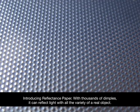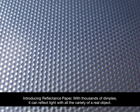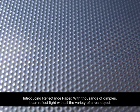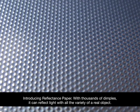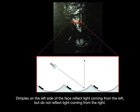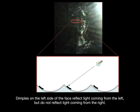With thousands of dimples, it can reflect light with all the variety of a real object. The placement of ink on each dimple determines which angles reflect light. Dimples on the left side of the face reflect light coming from the left, but do not reflect light coming from the right.